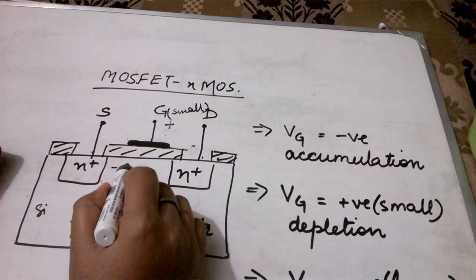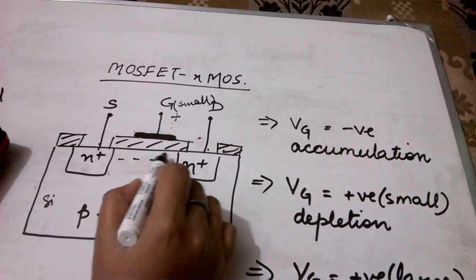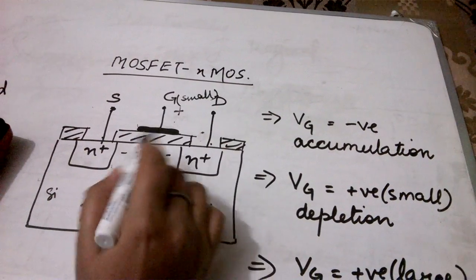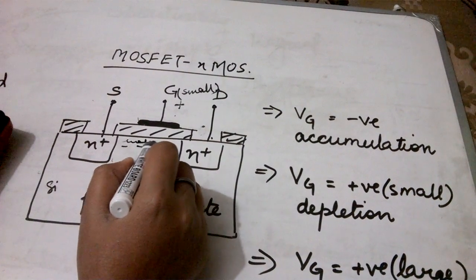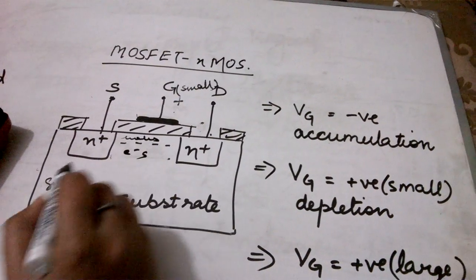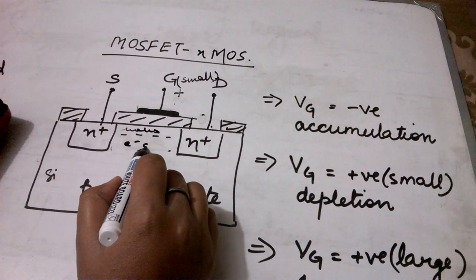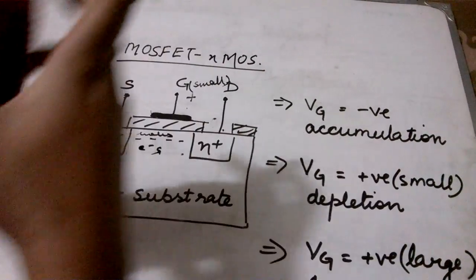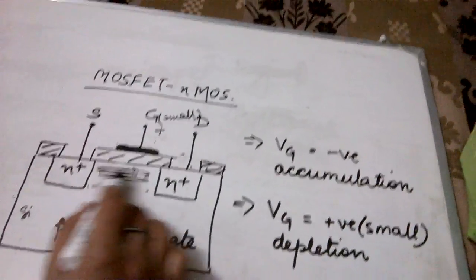So a few electrons will be attracted here. And since this part of the substrate was already having some holes, some holes were already present. And now a few electrons have also come. So both the holes and electrons recombine. And you know when the holes and electrons recombine, the region that is formed is a depletion region.